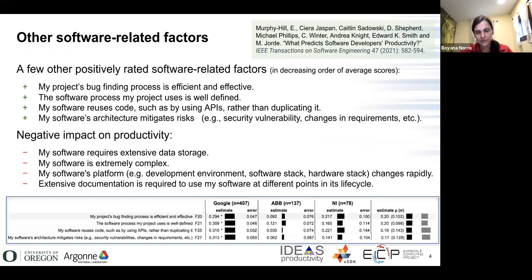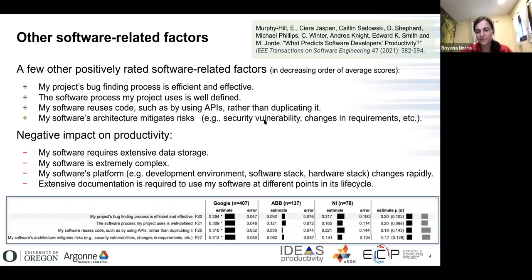Looking further, there are some software practice-related things that were rated. For example, 'I use the best tools and practices to develop my software' was a top factor at Google contributing positively to developer productivity. Other positively rated factors included: project bug-finding process is efficient and effective, well-defined software process, reuse of code such as by using APIs rather than duplicating functionality, and mitigation of risks in software design. Negatively rated factors included software that is very complex and rapidly changing hardware stacks.